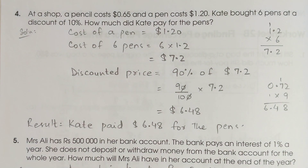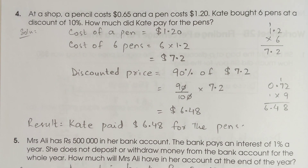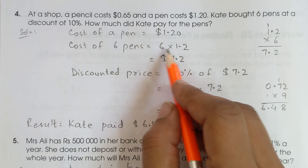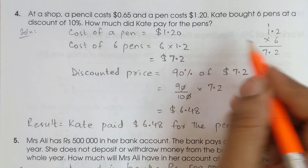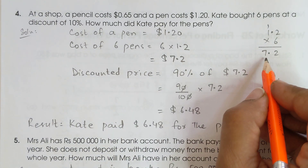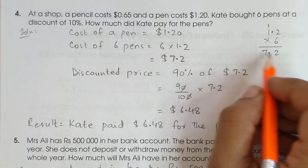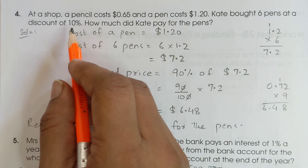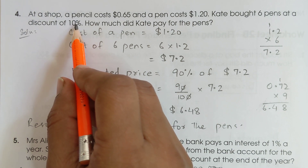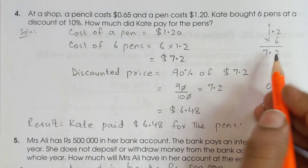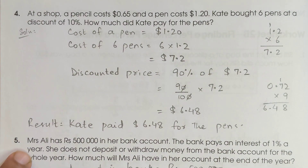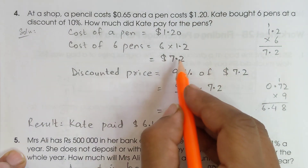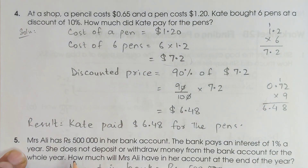They asked us only about the pen cost. One pen costs $1.20. So how much is the cost of 6 pens? 6 multiplied by $1.20. We need to apply the 10% discount, so we will not simply pay $1.20 per pen.